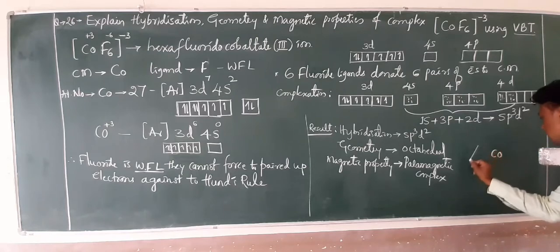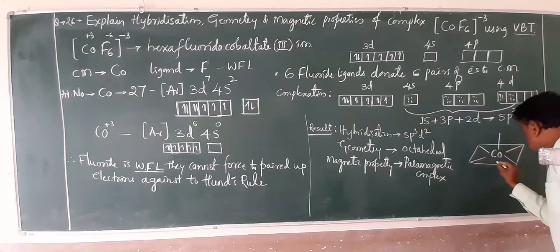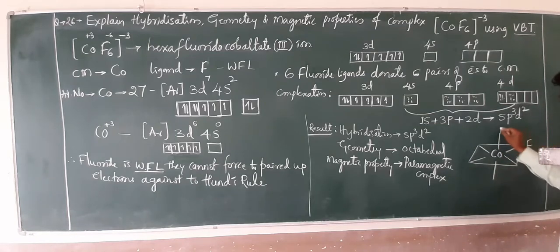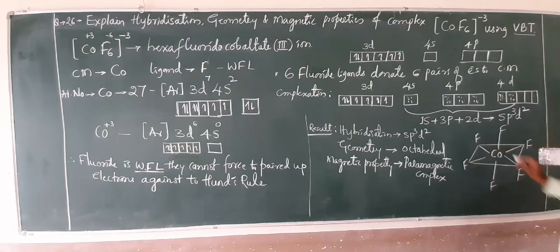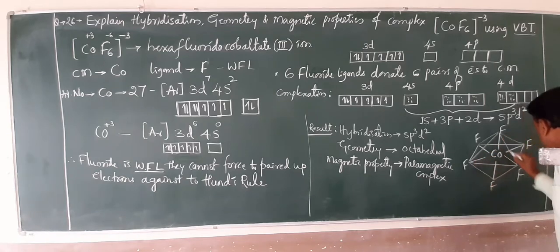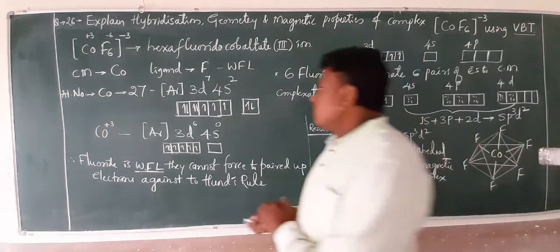If you want to know the structure or geometry of this complex: this is the central metal, it is cobalt. It is surrounded by six fluoride ions. This is a simple geometry which is available is the octahedral. This is enough for the exam point of view.